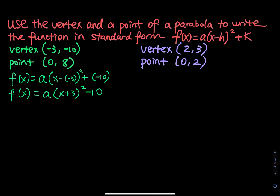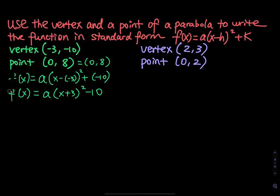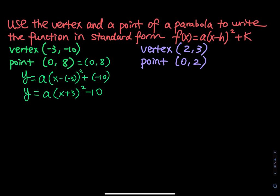How do we figure out a? To figure out a, you have to use a point. So this point is when x is equal to 0, y is equal to 8. Let's change f of x to y because that is easier to work with. So y equals to a times x, with x equals to 0, plus 3 square minus 10.